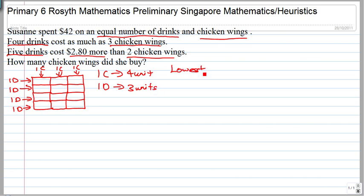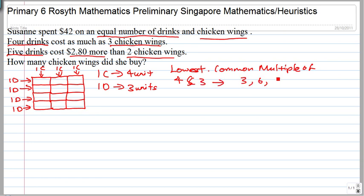I am actually finding the lowest common multiple of 4 and 3. If you were to list it down: 3, 6, 9, 12 and 4, 8, 12 — the lowest common multiple of 4 and 3 is 12. So 12 divided by 3 gives you 4 units per chicken wing, and 12 divided by 4 gives you 3 units per drink. So 1 drink will cost 3 units.